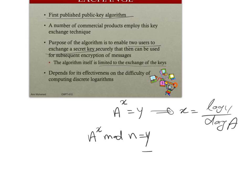Given Y, A, and N in A to the power X mod N equals Y, finding X is called the discrete logarithm problem. Unlike normal logarithms, you cannot simply take the log here because of the modulo. To solve it numerically you have to try X equals 1, then X equals 2, and so on — exhaustive search. There is no systematic polynomial-time algorithm for this.